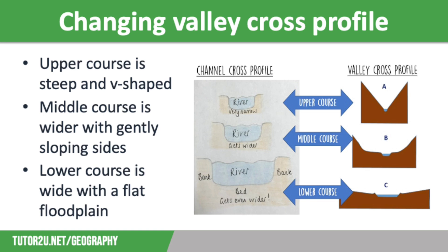In the middle course, the river's gradient is less steep, so the river starts to erode laterally with meanders forming, making the valley wider. The rock here is softer, so the valley sides erode, making them less steep. Lateral erosion needs more energy, so there is not much left to remove all the weathered material, so it builds up on the valley floor.